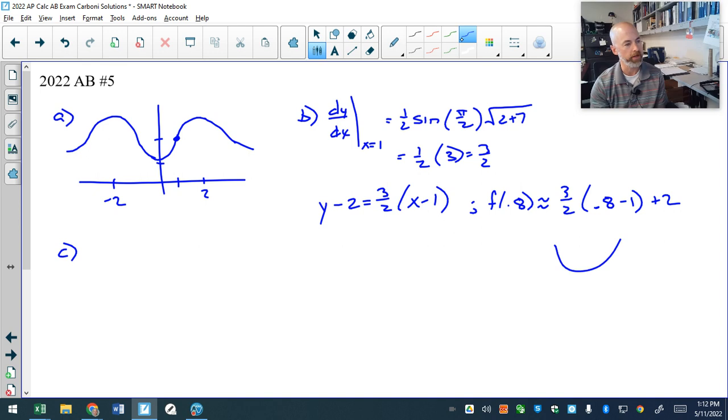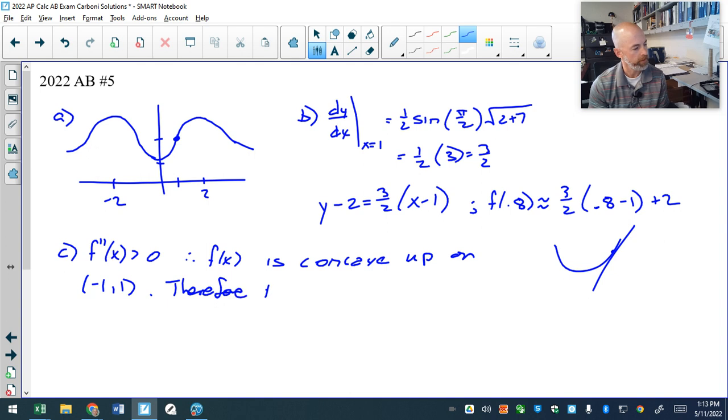So if from negative one to one, we're concave up, and I find the tangent at 0.8, and I use that tangent to approximate the function values, you can see with that graph that the tangent line is below the curve. Therefore it will be an underestimate, and I'm going to explain that by saying f double prime of x is greater than zero, therefore f of x is concave up. I'm going to make the conclusion of underestimate. I'm going to tie it to the concavity. You're concave up on the interval negative one to one, therefore the approximation in part B is an underestimate.